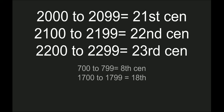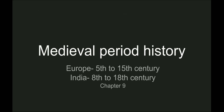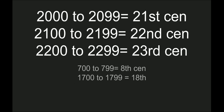Before we get further, it is important to know how the centuries are calculated. For India, the eighth to 18th century means from year 700 to year 1799. We are today in the 21st century, which is from year 2000 to 2099. The 22nd century will be from 2100 to 2199, and so on. We must remember that this medieval period starts around 700 CE to 1799 CE.